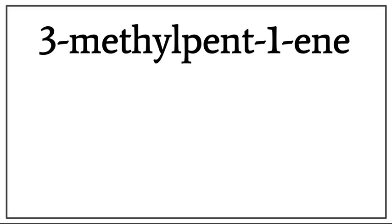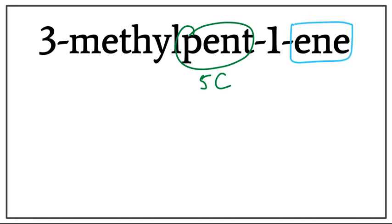Let's draw the structure for 3-methyl-pent-1-ene, or 3-methyl-pentene. Pent tells us that there are five carbons in the longest carbon chain. Ene tells us that this is an alkene, meaning that there is a double bond present between the carbons.